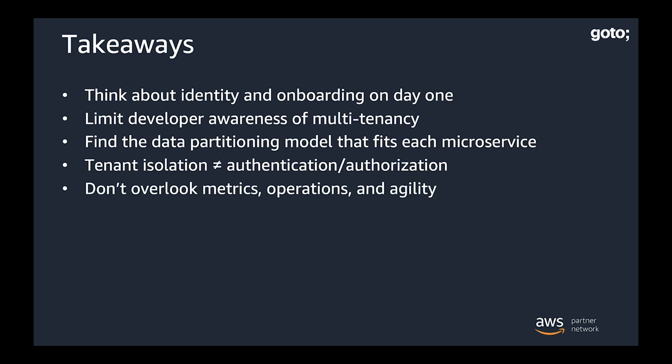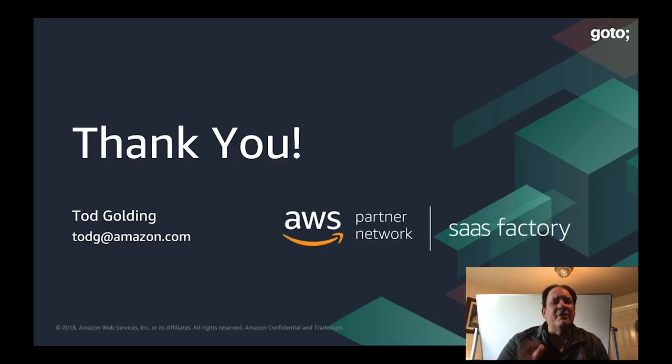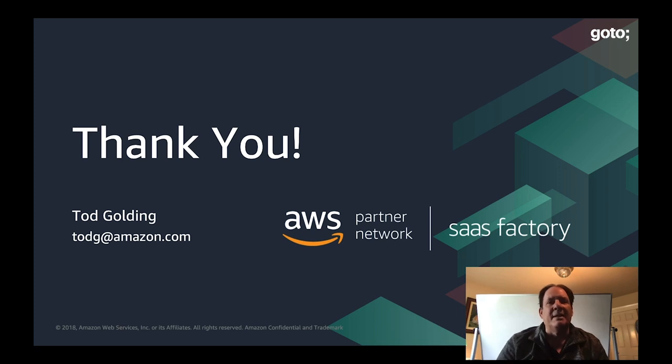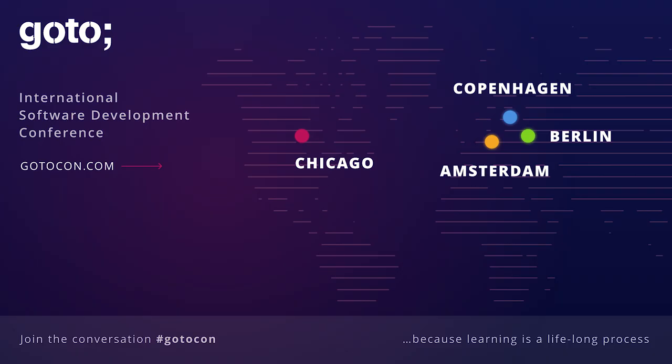The last thing here is the bits we really couldn't touch on — don't overlook metrics, operations, and agility. These are fundamental to building a really good SaaS product, but in this format we just didn't have the time to dig into those areas. If you're looking for more information, go out and hit the SaaS Factory page at AWS and you'll get more depth on some of these topics. And if outside this context you need to reach me, certainly feel free to hit my email address listed here. Thank you so much.